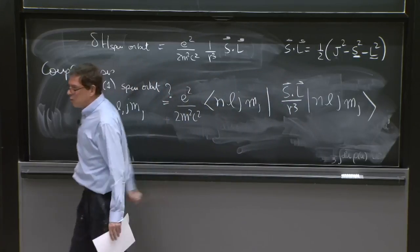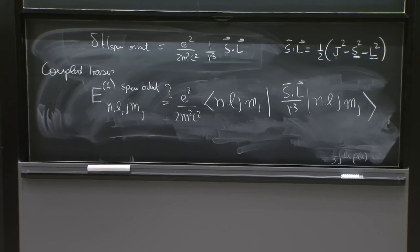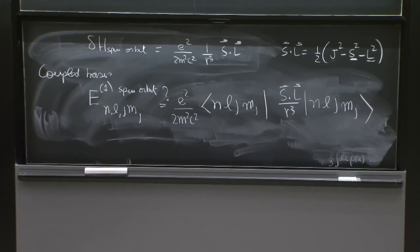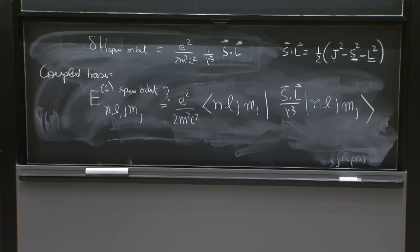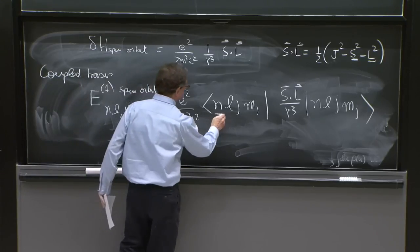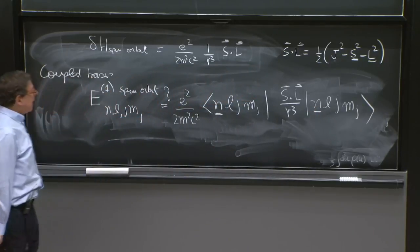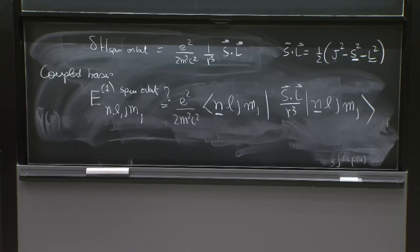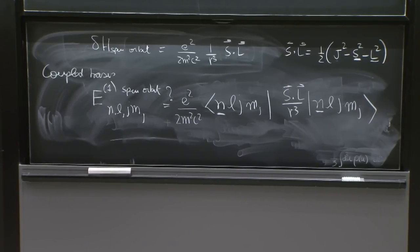The coupled basis will have degeneracies. All the states are degenerate there. So this time we fixed n, because degeneracies happen only when you fix n. So do we have the right to use the formula from perturbation, the non-degenerate perturbation theory, to do this calculation?